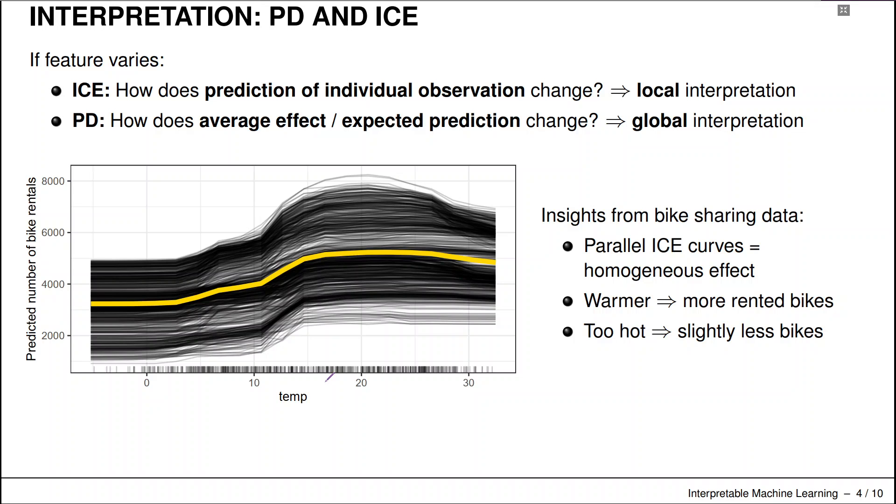What we can see here, because there is a homogeneous effect in the ICE curves, we can hopefully with safety interpret the PDP plot. And there are hopefully not too many interaction effects going on in that model. And we can conclude that the warmer the temperature becomes, the more bikes we rent out. Seems very plausible.